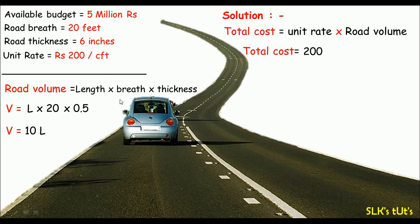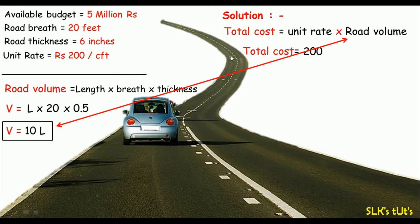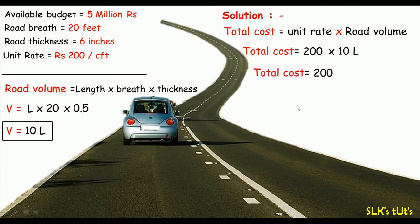I can substitute the volume into our formula. So total cost equals 200 times 10L, which gives total cost equals 2000 times the length of the road. Remember, the total cost is the available company budget, which is five million RS.